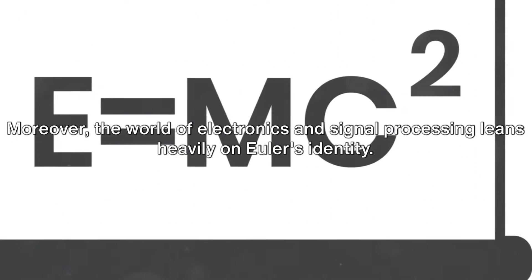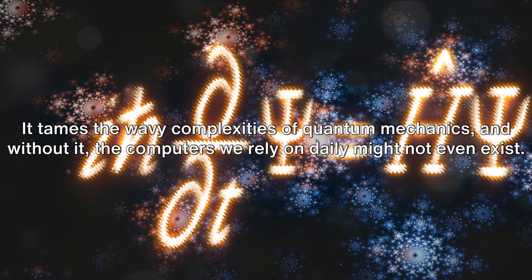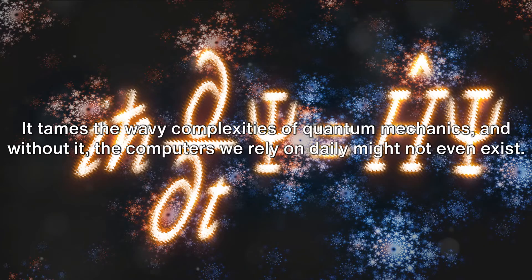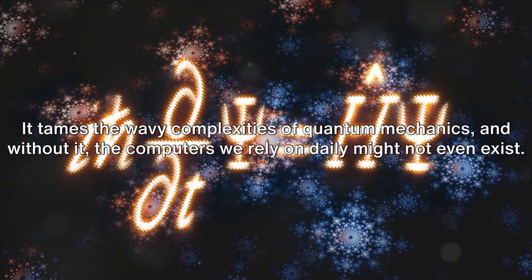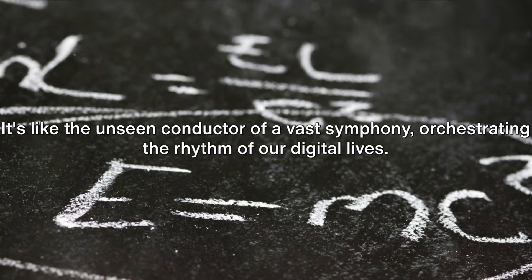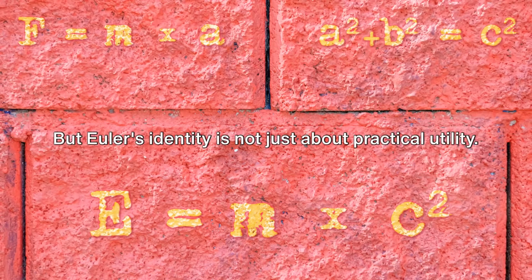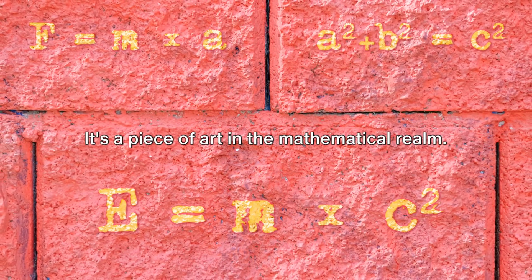Moreover, the world of electronics and signal processing leans heavily on Euler's identity. It tames the wavy complexities of quantum mechanics, and without it, the computers we rely on daily might not even exist. It's like the unseen conductor of a vast symphony, orchestrating the rhythm of our digital lives.